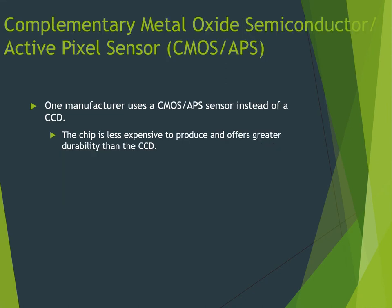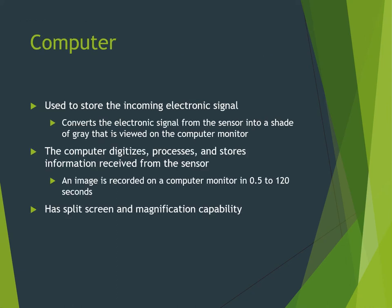The complementary metal oxide semiconductor with active pixel sensor — CMOS APS — is used by some manufacturers instead of CCD. The chip is actually less expensive to produce and offers greater durability than the CCD. It's a newer technology so most offices haven't adopted it yet. The sensors can be connected to a computer using a low-power external connection such as USB. The computer stores the incoming electronic signal and does all the work converting the electronic signal from the sensor into a shade of gray viewed on the monitor.